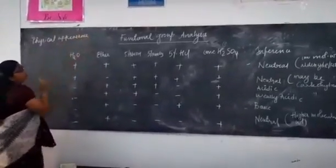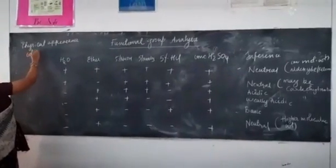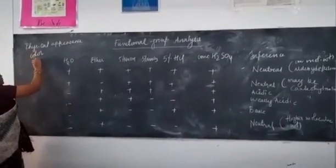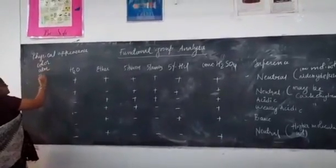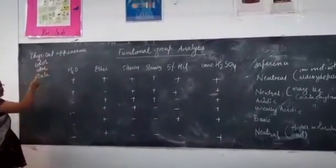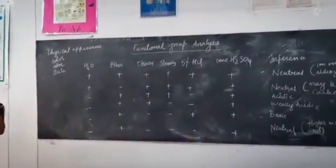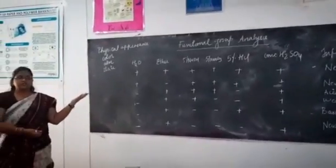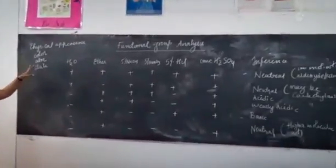What is the color? What is the state of the compound? It can be either colorless or it can be some brownish colored compound. You can observe the color.